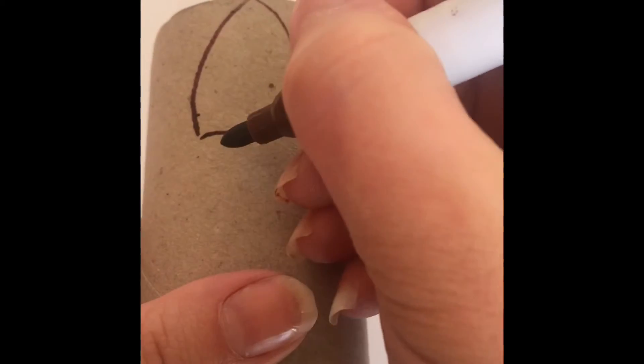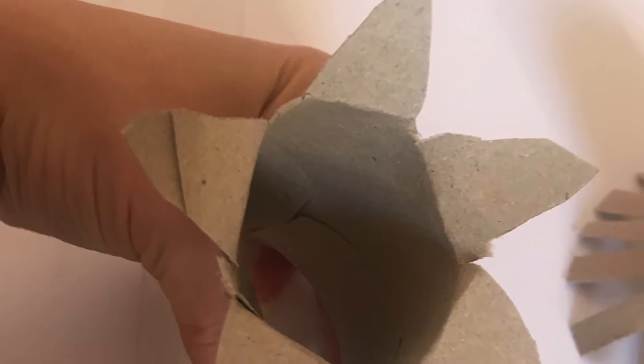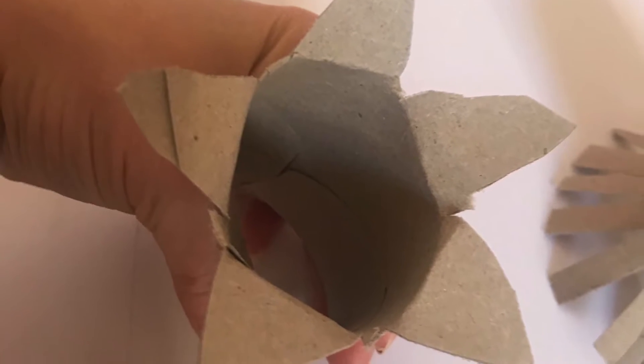Then with your second toilet roll holder you'll need to draw a petal with the point facing to the top, and then you're going to cut out the petals all around like so.